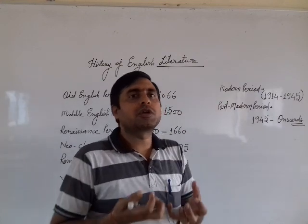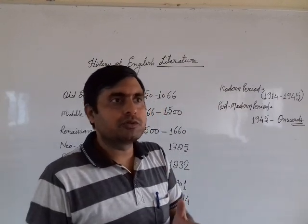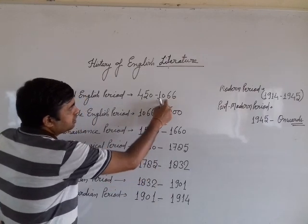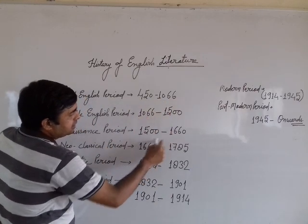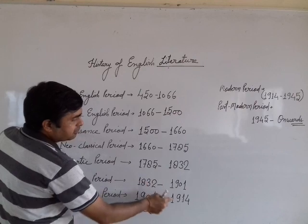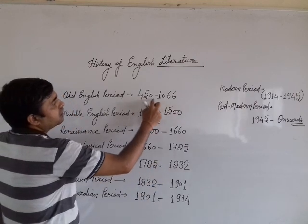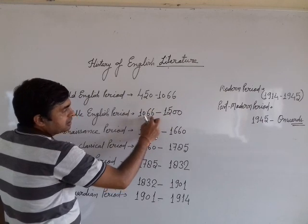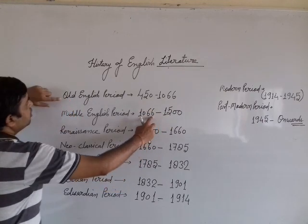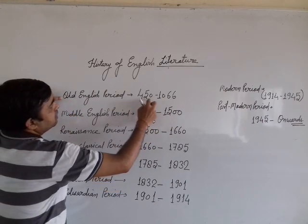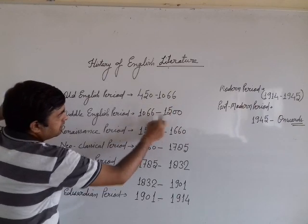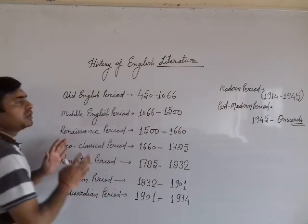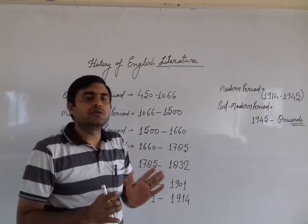There is a similarity — a way to remember it. Look, you can see there is a sequence. You can remember: 450 to 1066, then 1066. You can see that sequence, which will make it very clear to you.